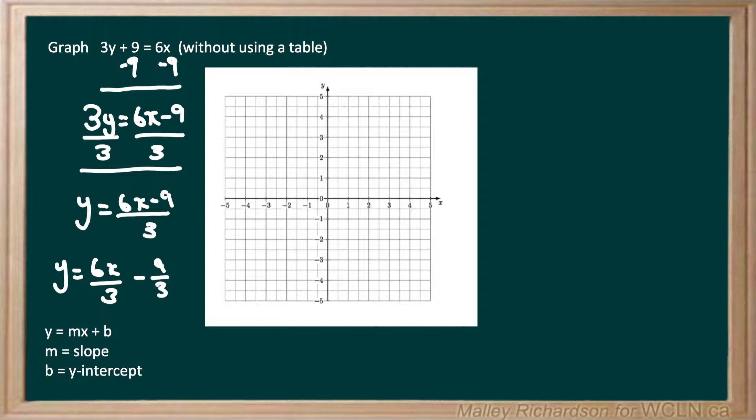And if we reduce this down, we get our formula of y equals 6 divided by 3 which is 2x, minus 9 divided by 3 which is 3. So now this is our new formula.